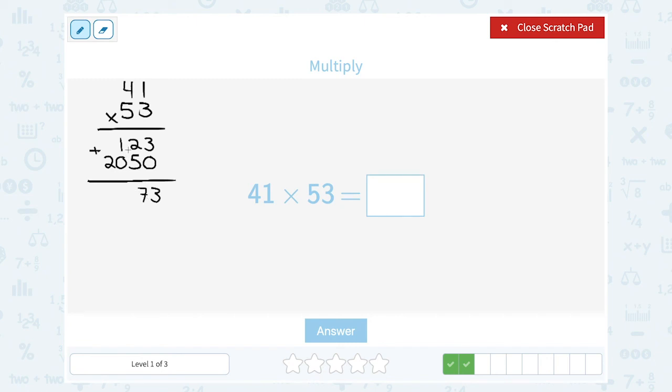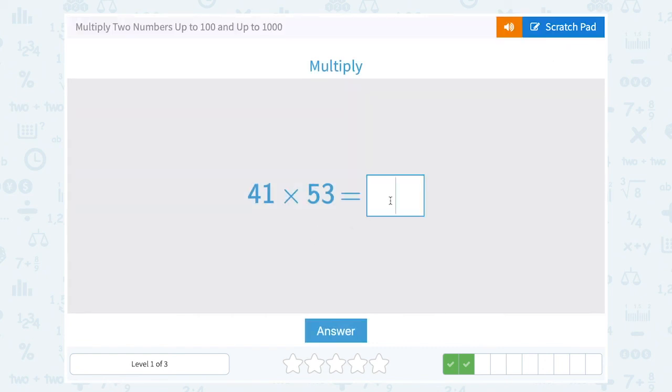In the hundreds place, 1 plus 0 is 1. And in the thousands place, I just have that 2. So all together, 2,173.